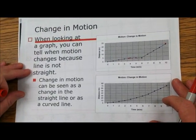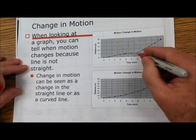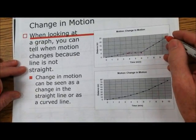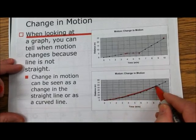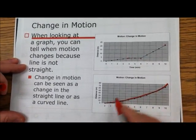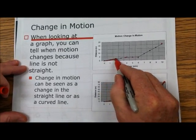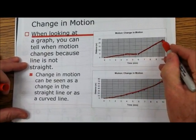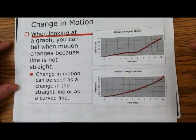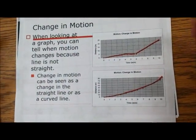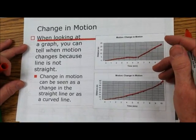When looking at a graph, you can tell when motion changes because the line is not straight. When the line is straight, there's no change in motion — it's moving at a constant speed. When there's a curve, that means a change in motion. Even a little curve means you're accelerating — getting faster and faster. That's how you can just look at a graph and see changes in motion. We're going to give you some to work on on your own.